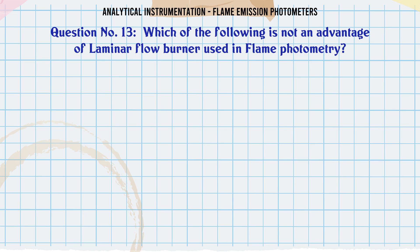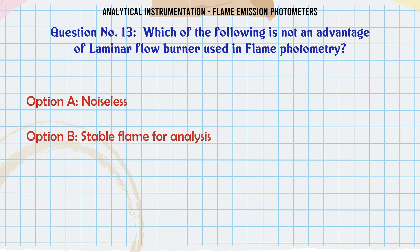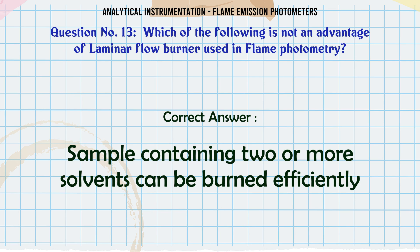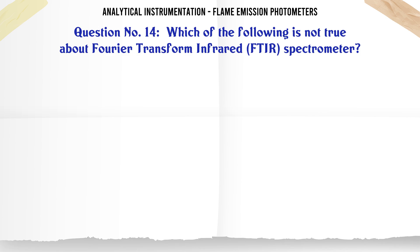Which of the following is not an advantage of laminar flow burner used in flame photometry? A. Noiseless. B. Stable flame for analysis. C. Efficient atomization of sample. D. Sample containing two or more solvents can be burned efficiently. The correct answer is: Sample containing two or more solvents can be burned efficiently.